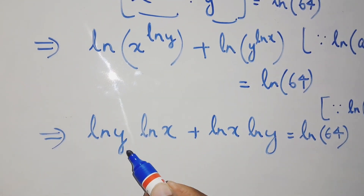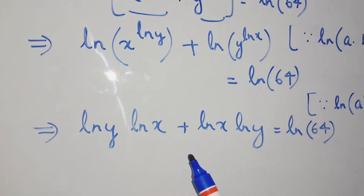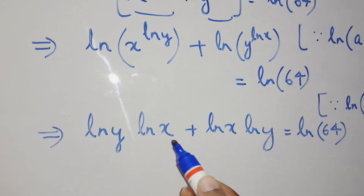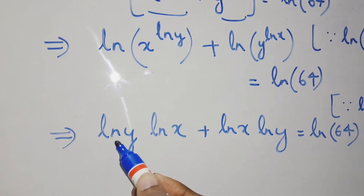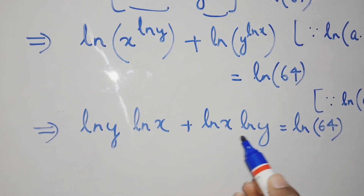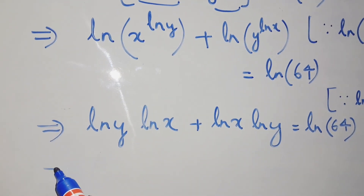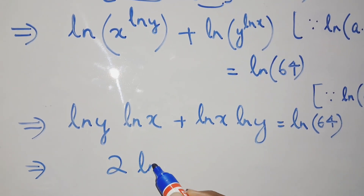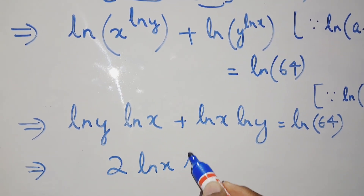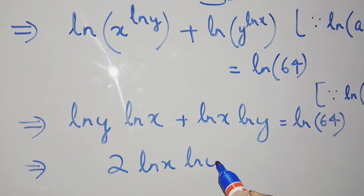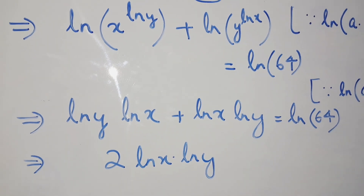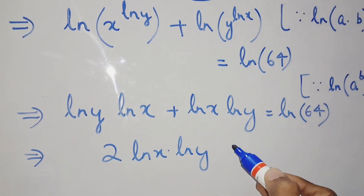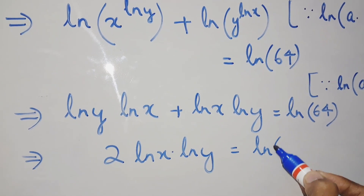We can see that these two terms, ln x · ln y and ln y · ln x, are the same when multiplied. So we combine them to get 2 times ln x · ln y equals ln 64.